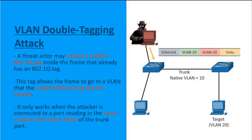With a VLAN double tagging attack, a threat actor embeds a hidden 802.1q VLAN tag inside a frame that already has an 802.1q VLAN tag. For example, an attacker communicating from VLAN 10 to a targeted VLAN 20 would build a frame with an external VLAN header of VLAN 10 and an internal tagged VLAN of VLAN 20.